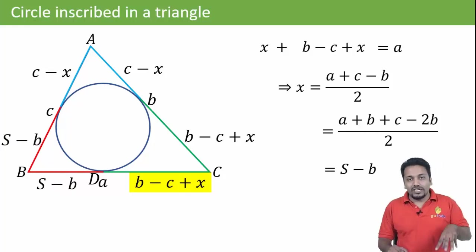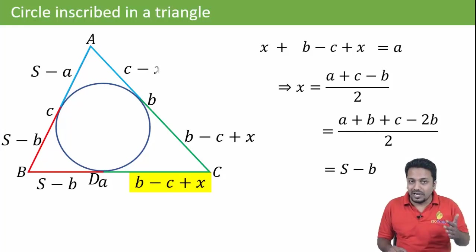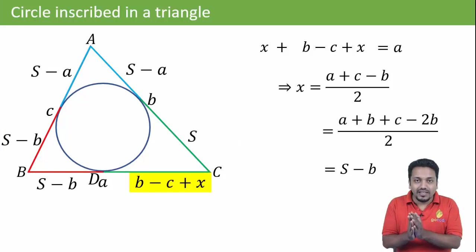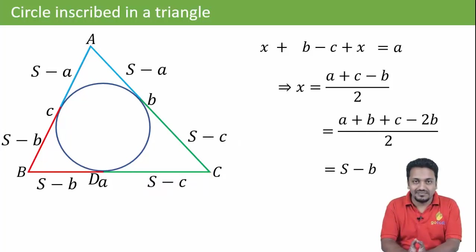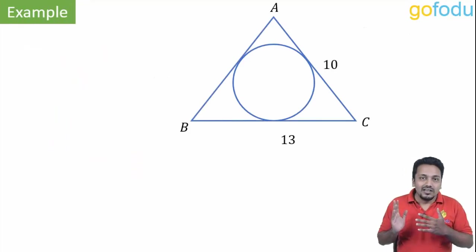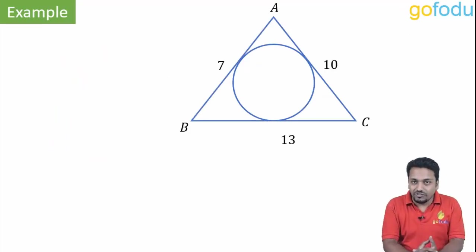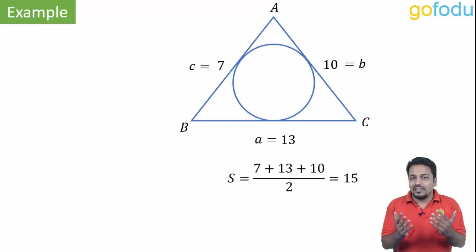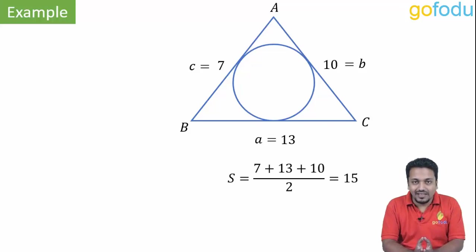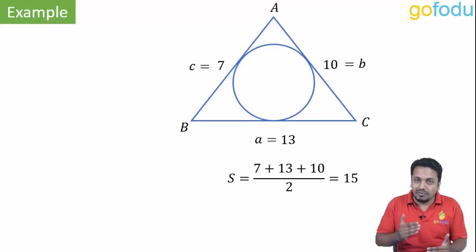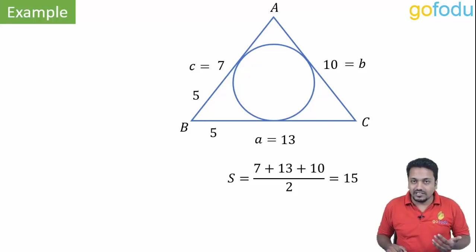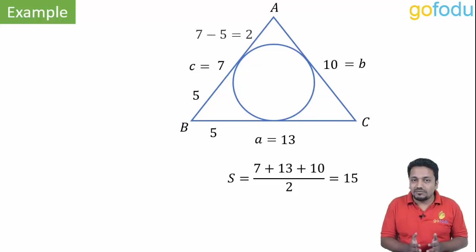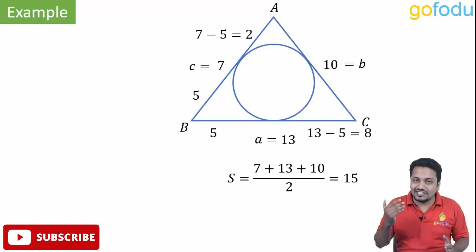Similarly, tangents from point A will be s minus a, and from point C will be s minus c. Now in a triangle with a, b, and c given, the semi-perimeter will be 15. Tangents from point B will be s minus b, that would be 15 minus 10, which is 5 units. And after this, rest is easy: 7 minus 5 is 2, and 13 minus 5 is 8.